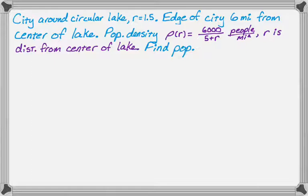The population density, which is rho of r, is 6,000 over 5 plus r people per square mile. As you get farther from the center, the population density is decreasing, which happens pretty commonly in real life. r is the distance from the center of the lake, and the problem is to find the total population.